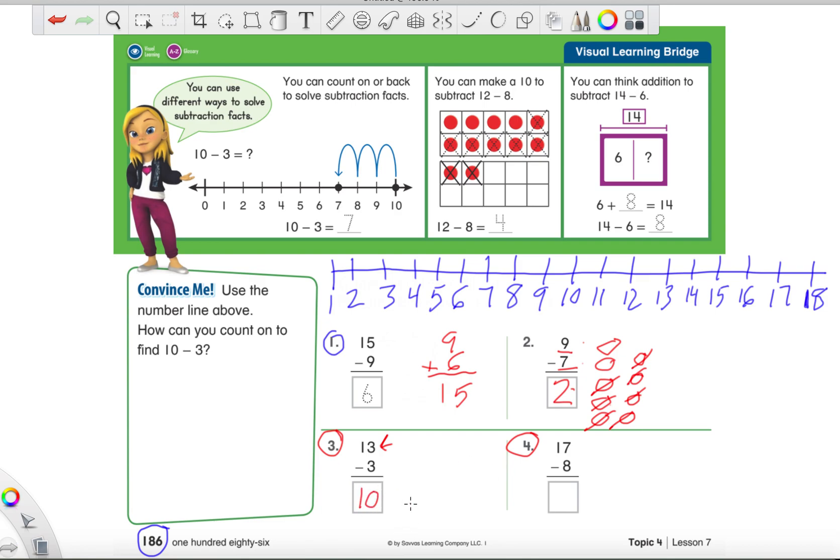Now, I could also check my work by making a quick picture. I can make 13 circles: 1, 2, 3, 4, 5, 6, 7, 8, 9, 10, 11, 12, 13. And, now I just have to look at how many I'm taking away again, which is 3. So, I cross out 3: 1, 2, and 3. And, I just count how many I have left, which right here is 1, 2, 3, 4, 5, 6, 7, 8, 9, and 10. I got the same answer again.